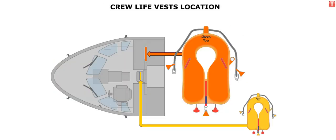Life vests are located behind the first officer's seat. The life vests are contained in sealed plastic pouches.